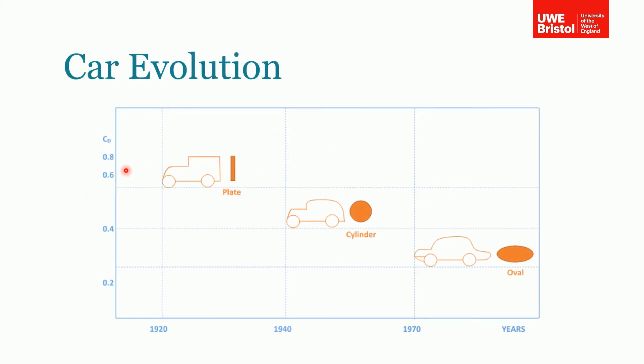Just a quick word on how this impacts real life. If we look at how cars have evolved over the years, if we look back to the 1920s, then the types of vehicles that were being produced then were very blocky. These can be analogous to some sort of plate with very high drag coefficients, around 0.6 to 0.8. But as the need for more fuel efficient cars has grown, the shape of them have changed, trying to take advantage of a lower amount of drag and higher fuel efficiency. So you can see as time has gone on, the shape's been approximated from a plate to a cylinder to an oval in more recent years.